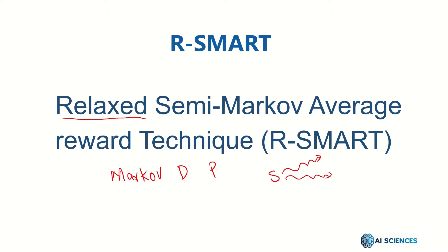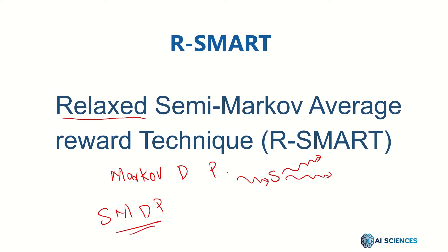In MDP there is no past — how you reach a given state is not important. In SMDP, the Semi-Markov Decision Process, what happens is that while we are counting the average rewards, we also actually count the transition times as well.